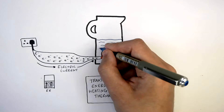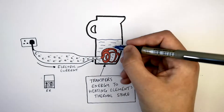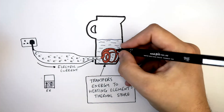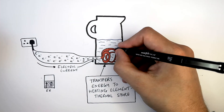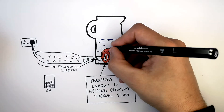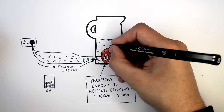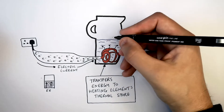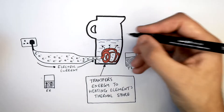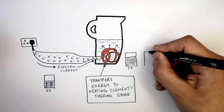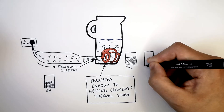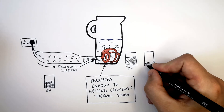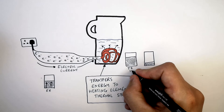And if we're to add cold water to the kettle we're going to see a transfer of energy from the thermal energy store of the heating element to the thermal energy store of the water. I've now drawn the thermal energy store of the water, which is currently much lower than the thermal energy store of the kettle.